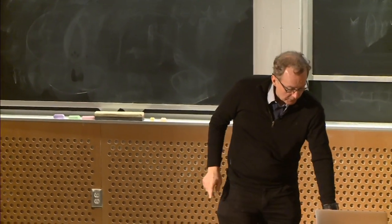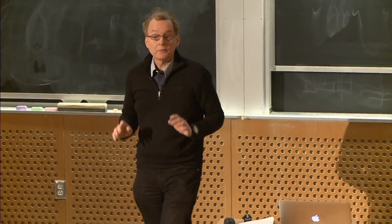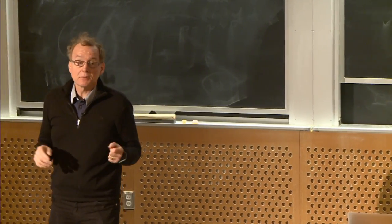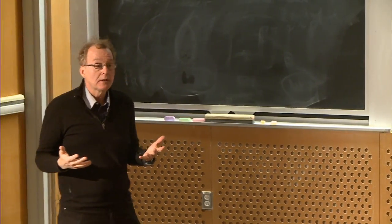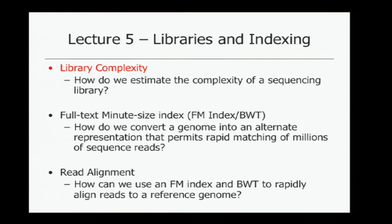Let's start with what we're going to be talking about today. We'll first discuss what a sequencing library is and what we mean by library complexity. We'll then turn to what has been called a full text minute size index — sometimes called a Burroughs-Wheeler transform index, a BWT index, or an FM index — which is at the center of most modern computational biology algorithms for processing high-throughput sequencing data. Then we'll turn to how to use that type of index for read alignment.